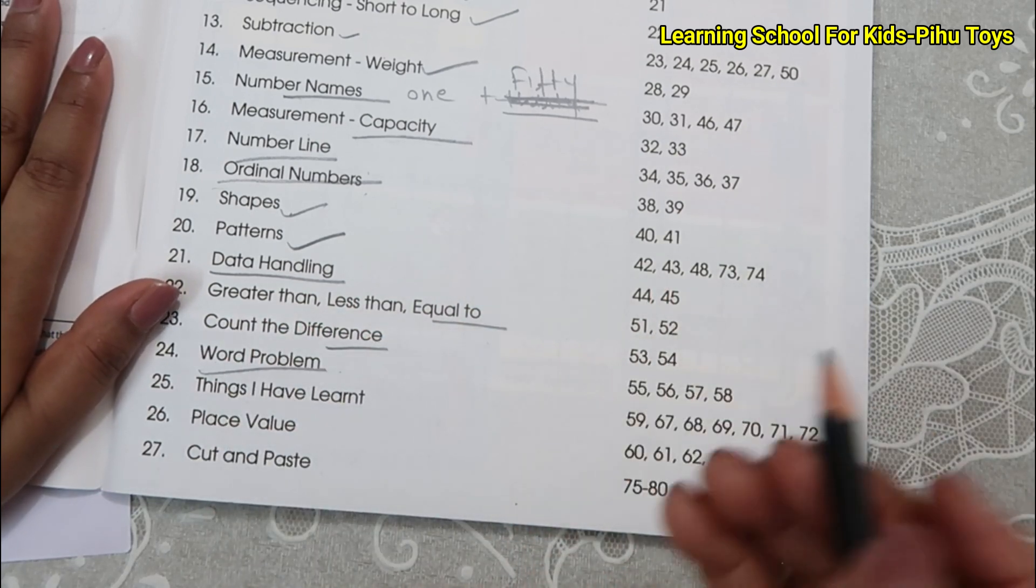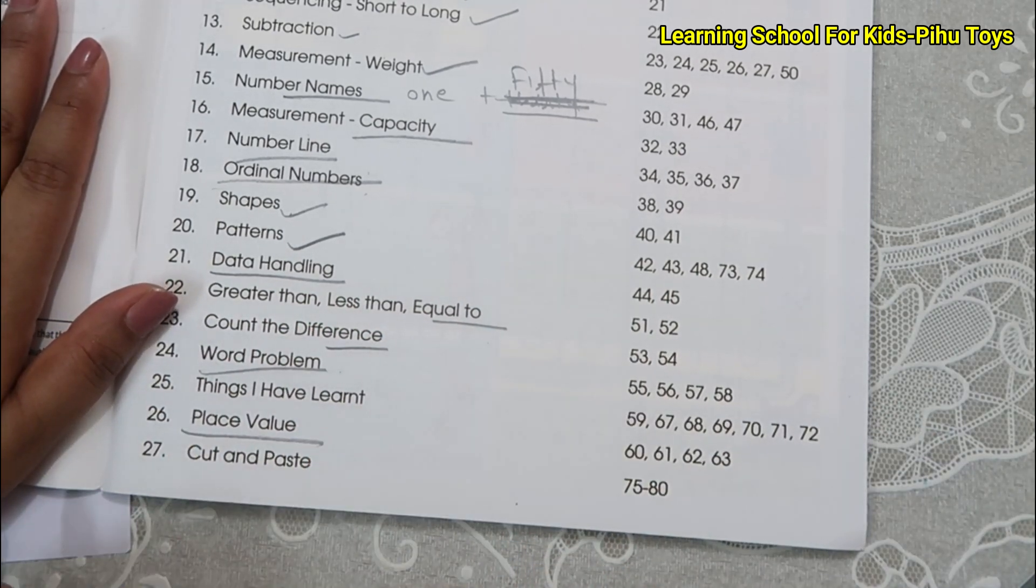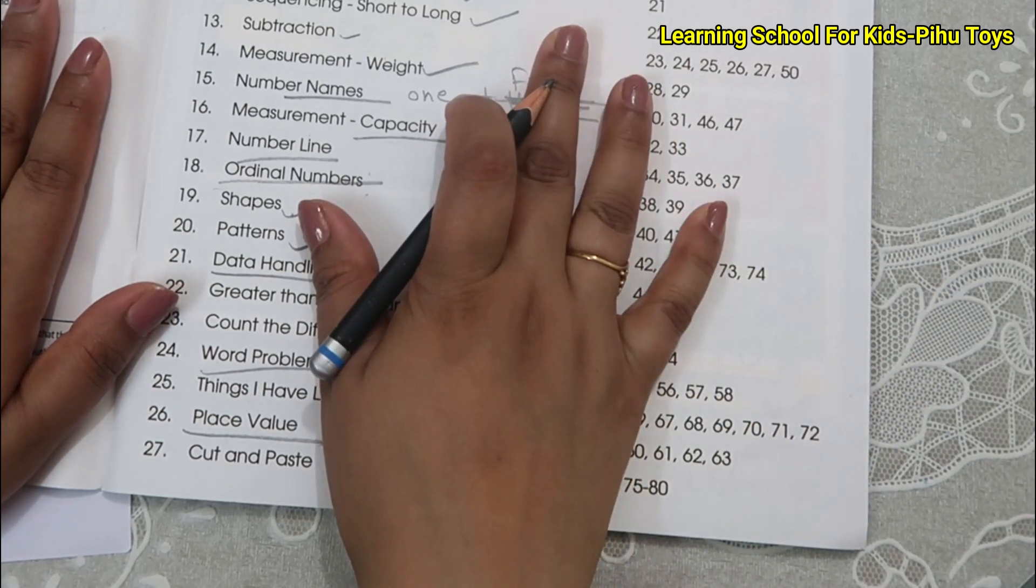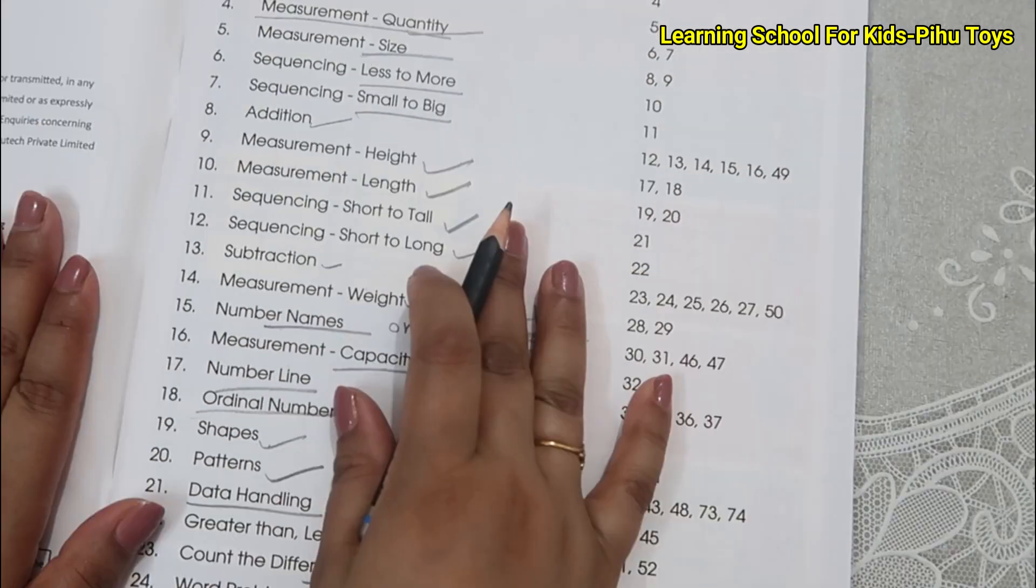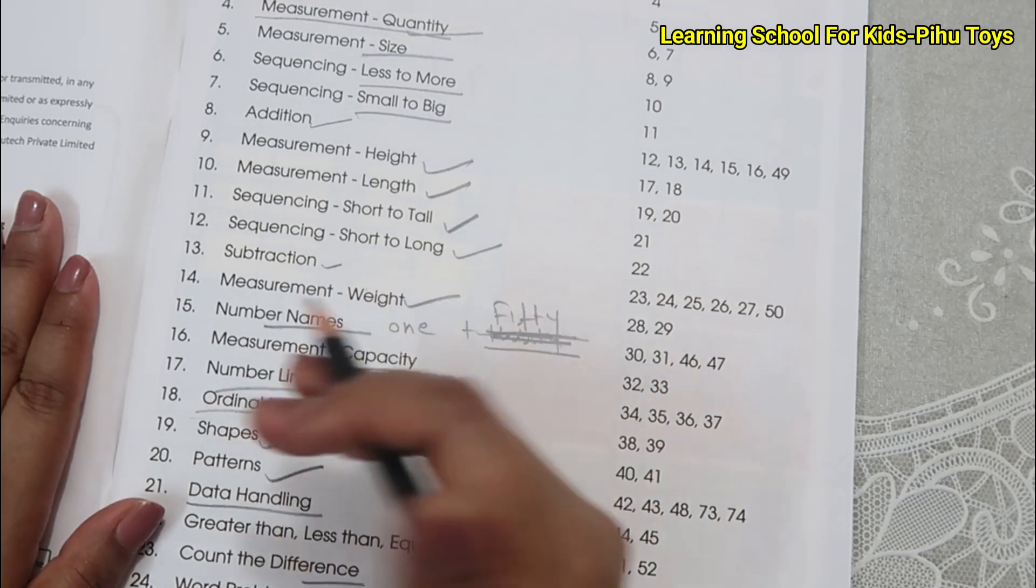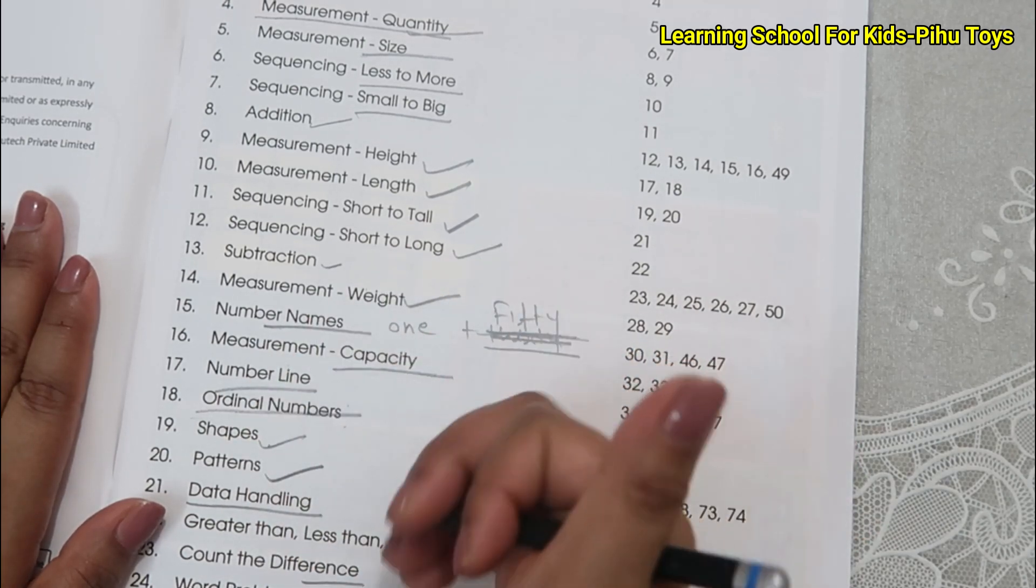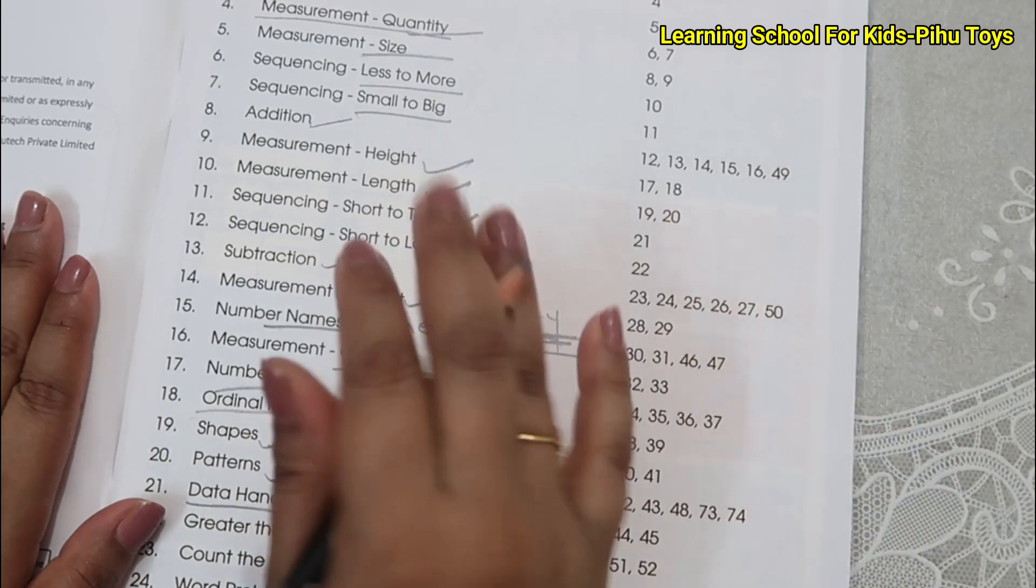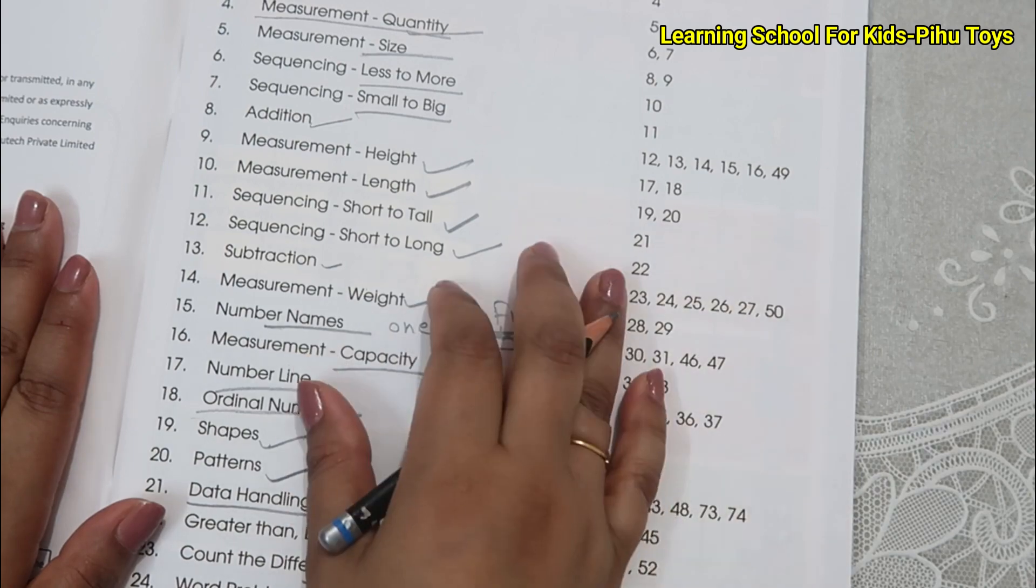And place value. Place value is taught to children in UKG, okay. The place value of one and the place value of 10 is taught to children in UKG. I hope you found my video helpful. If you found it helpful, please like and subscribe to the channel. See you in the next video. Until then, bye bye, take care, have a nice day, bye.